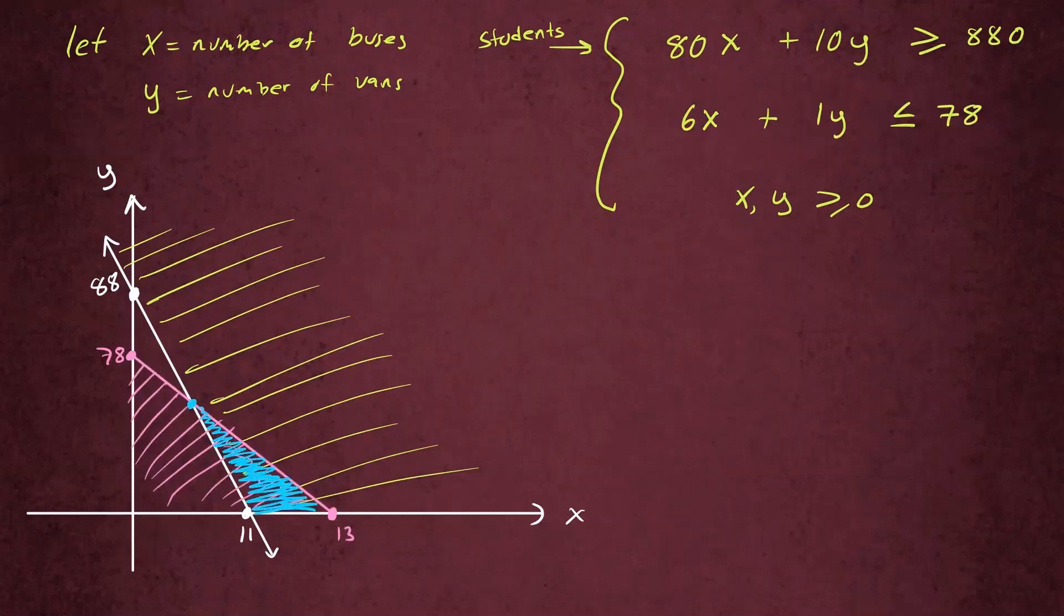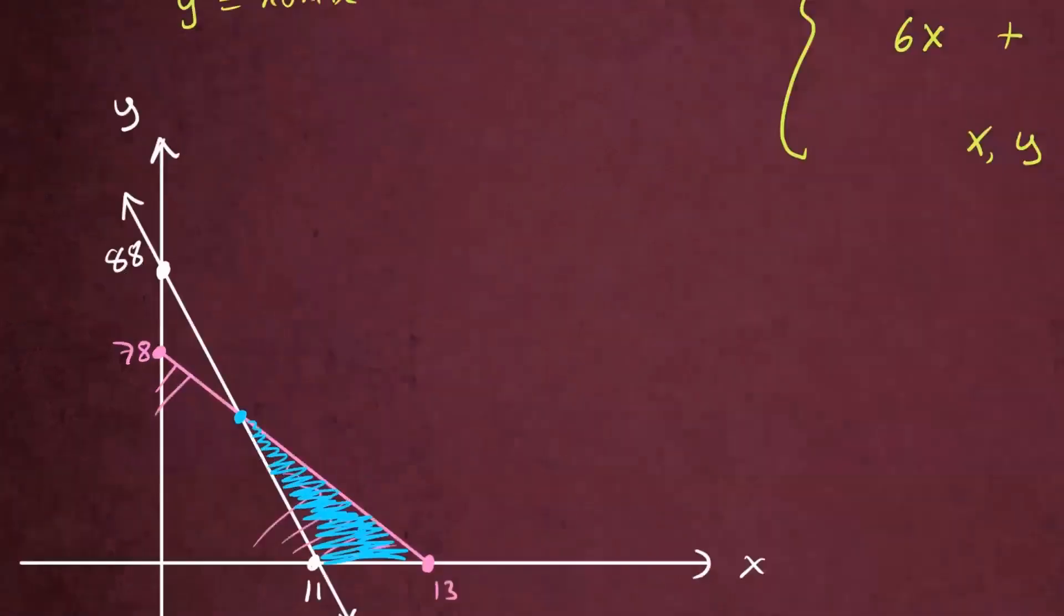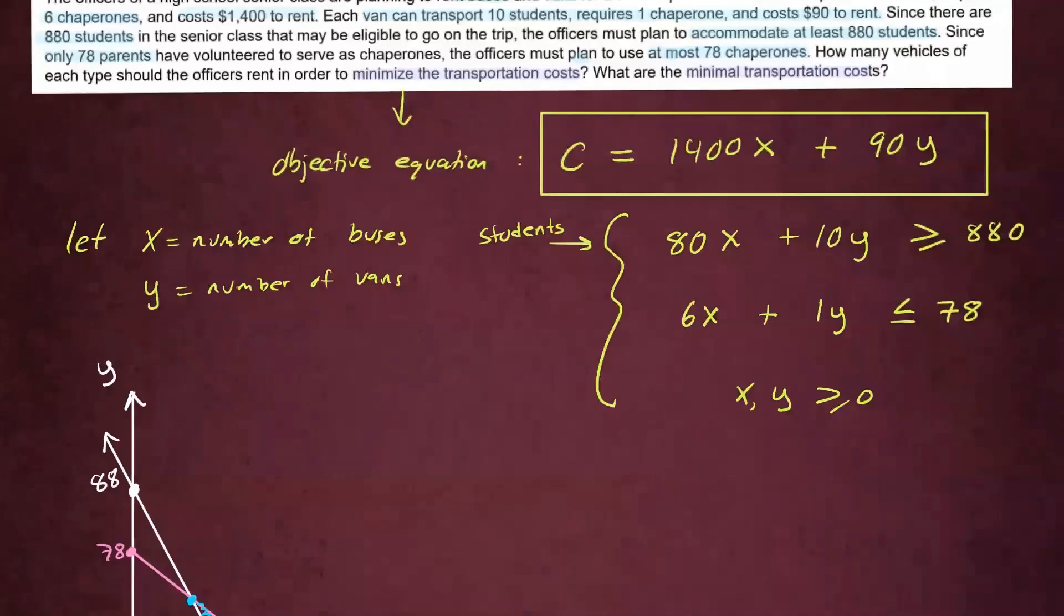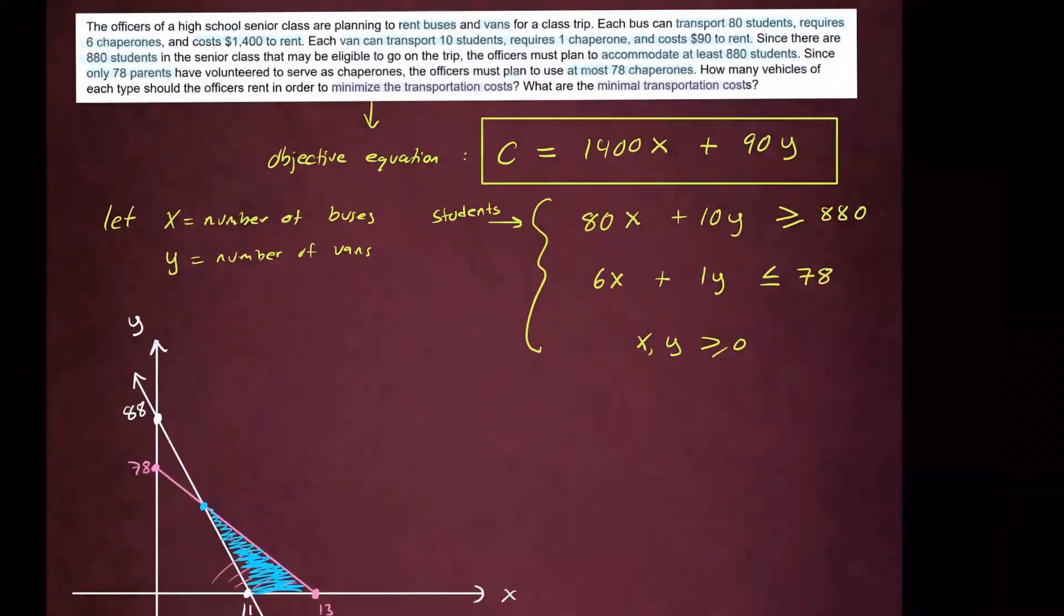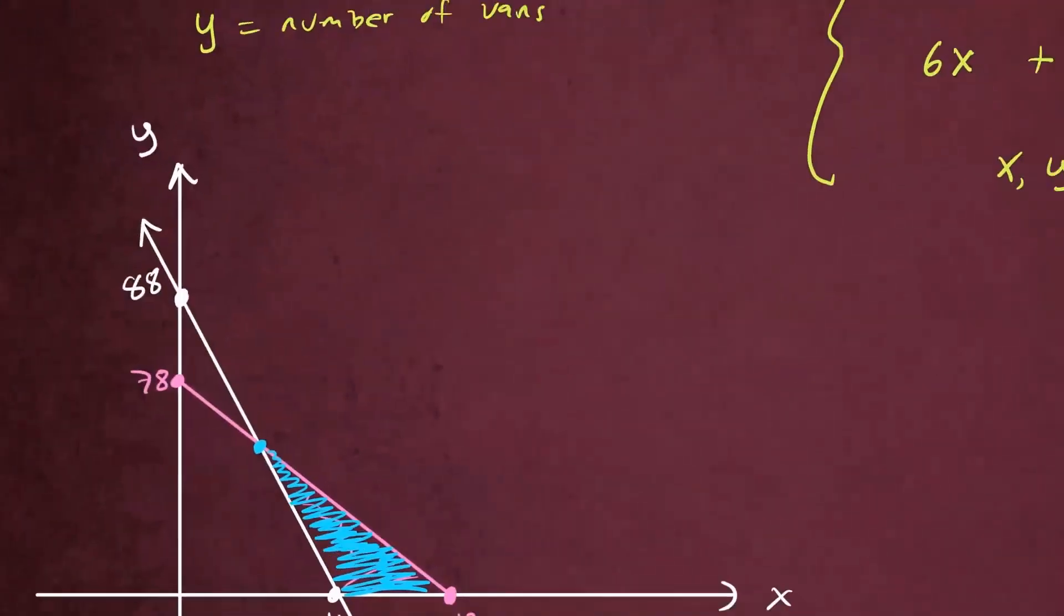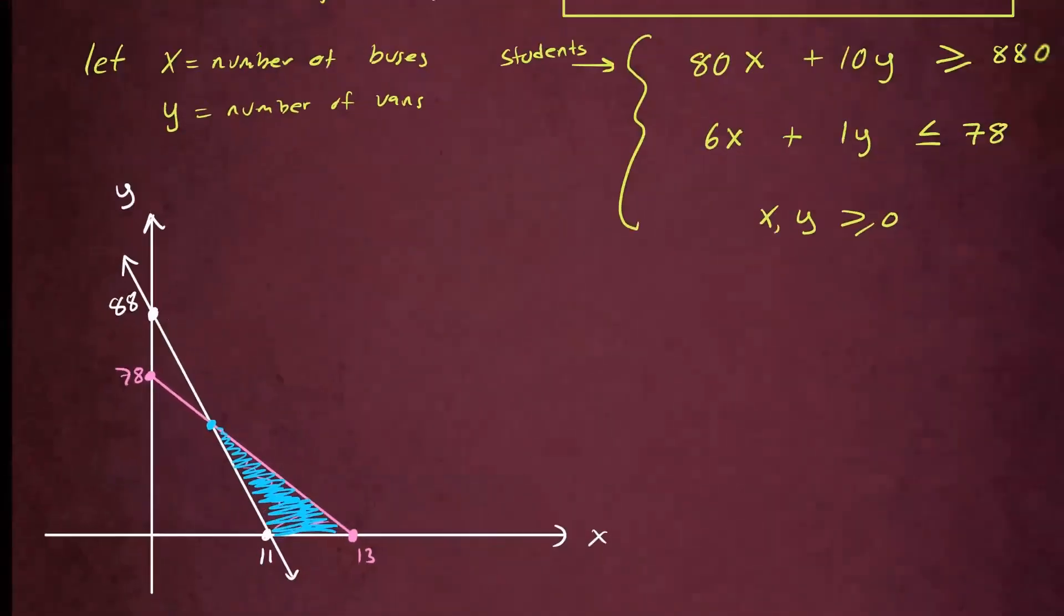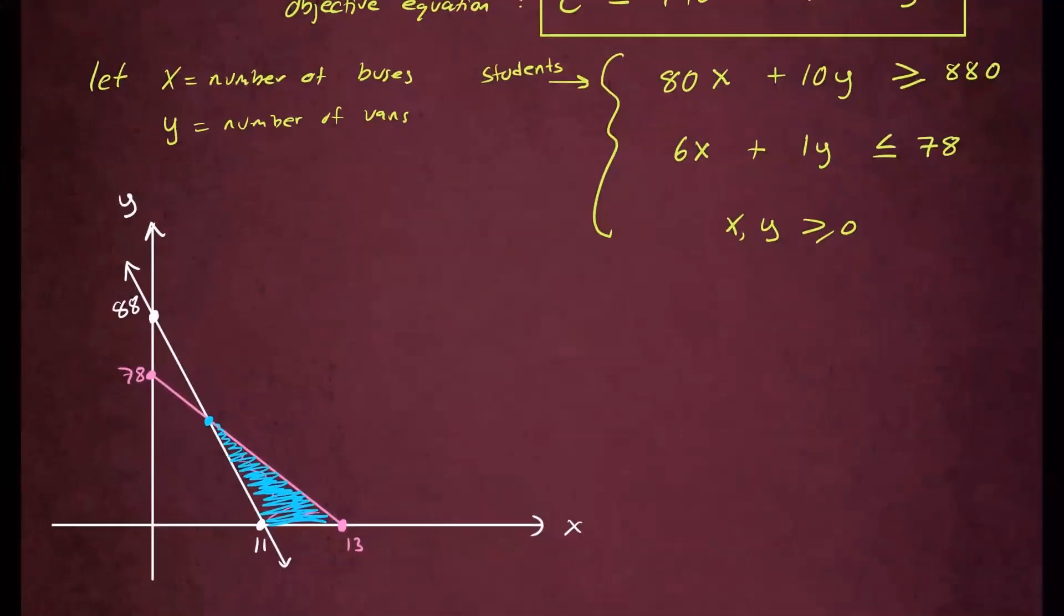Let's go ahead and get rid of these since we don't need those portions. So here is our solution region. Now we're going to go ahead and find our corner points. Corner points are points that are intersecting the boundary curves and they're in the solution region. So this is one of them, this is one of them, this is one of them. And we're going to see which one of these, when we plug into our objective function, gives us the minimum value.